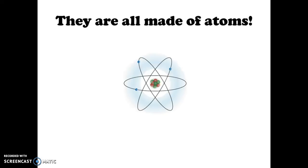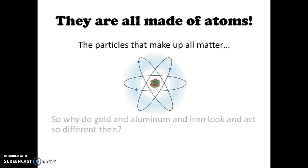And what are those atoms again? We've talked about them a few times. Atoms are the particles that make up all of our matter. So if we're thinking about our gold and our aluminum and our iron, what do they look and act so different then?